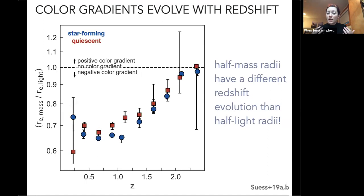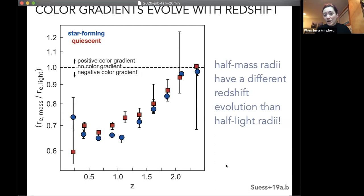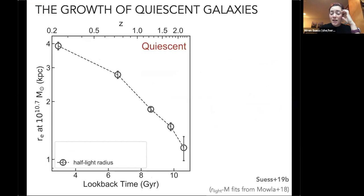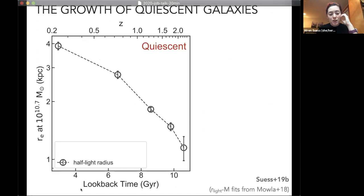This fairly strong color gradient evolution has not really been seen before and it's interesting because it means half-mass radii have a different redshift evolution than half-light radii. The view we had before of the galaxy size-mass relation was not just showing size evolution but also this fairly strong color gradient evolution. Now that we have these color gradients measured, I can plot the actual evolution of half-mass radii over cosmic time, focusing on quiescent galaxies.